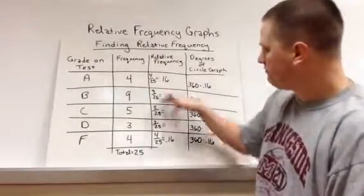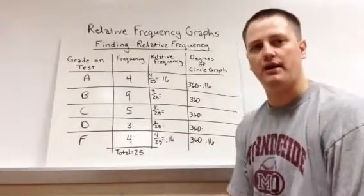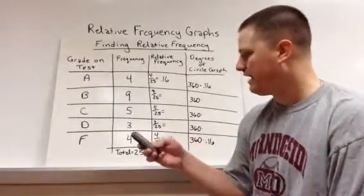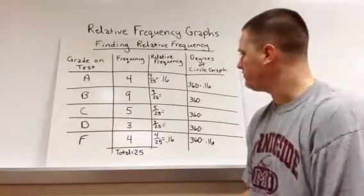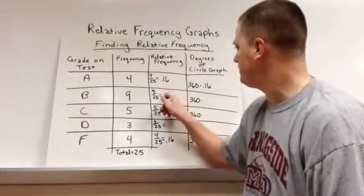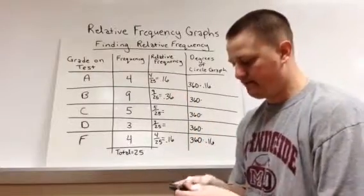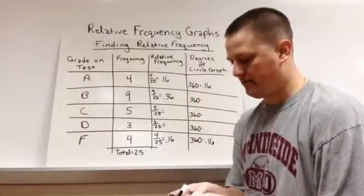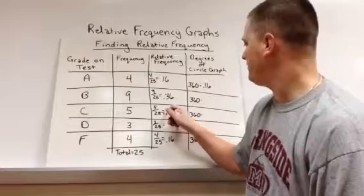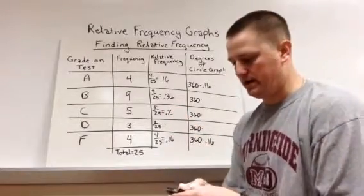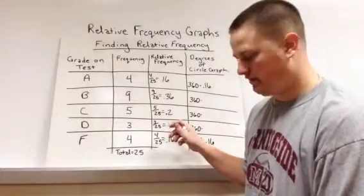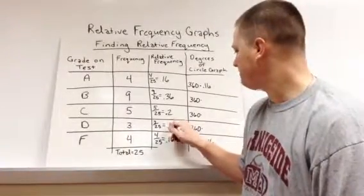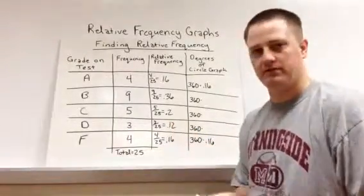Now I'll just do the rest of them. We've got 9 divided by 25, which is 0.36. 5 divided by 25, which is 0.2. And 3 divided by 25, which is 0.12. So now we have all these decimals.